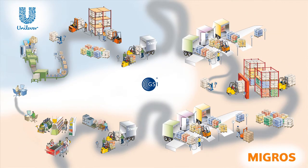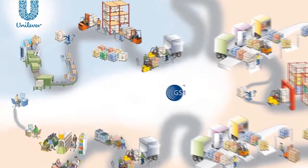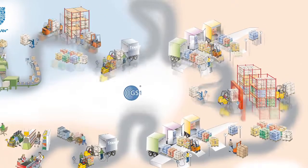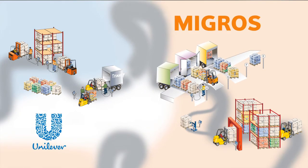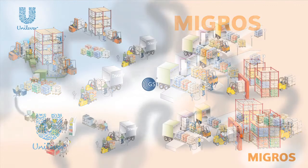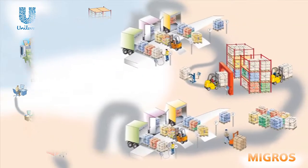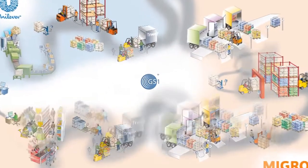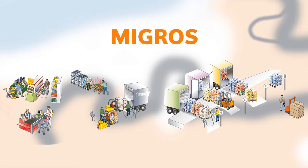This is a typical supply chain that is representative for many industries. The use of the SSCC starts right here in production at Unilever. Goods are produced and packaged into logistic units used for storage and transport. The goods are then shipped from Unilever to the distribution center of Migros. Within the distribution center, goods are received, stored, picked into trade items, and then prepared for shipment to the retail store. The goods are loaded onto trucks and transported to the store.